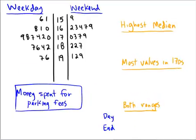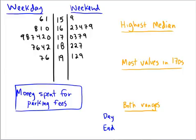For this problem, let's interpret some back-to-back stem-leaf plots. As a reminder, what a stem-leaf plot represents is a stem and a leaf. When you see a number like in the 18 row with a 2 for weekend, it symbolizes a stem of 18 and a leaf of 2, representing the number 182. It's a way to save space and time without having to write out each number in the 180s individually, and it makes it easier to see some shapes.